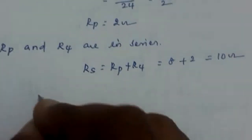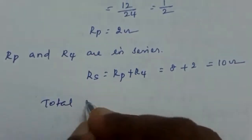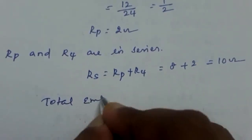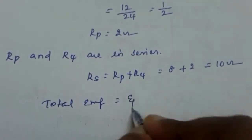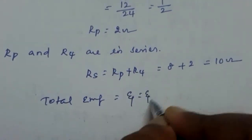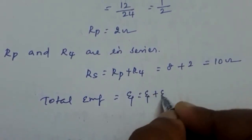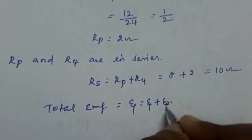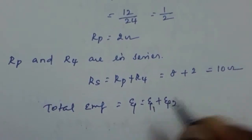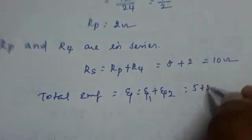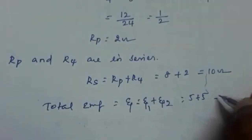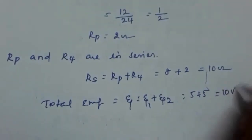Now we find the total EMF. Total EMF ψ = ψ1 + ψ2 = 5 + 5 = 10 volts.